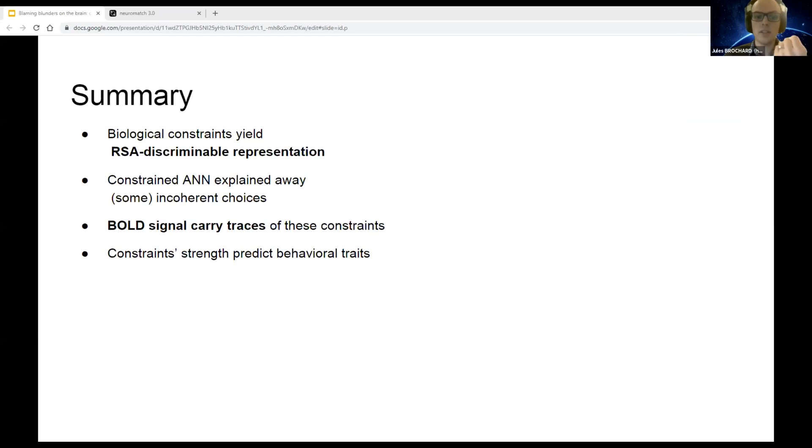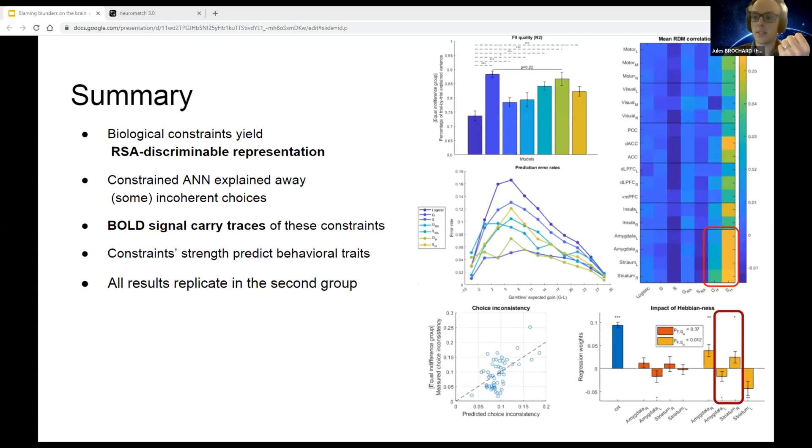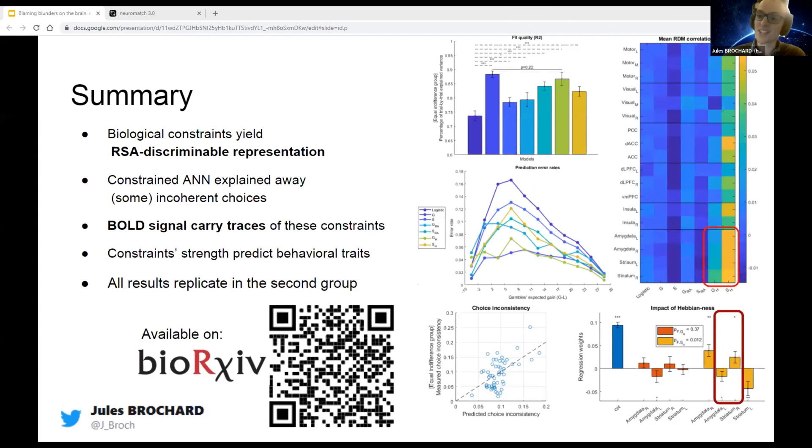We can find traces of these constraints in the BOLD signal, and we can use this trace to understand behavioral differences. Last but not least, all this result has been replicated in the second group of this study. Thanks for your attention, I'll be happy to have questions. Thank you so much Jules, that was great. Now we are open to have questions. Write it down in Q&A or chat.